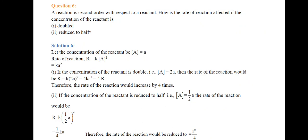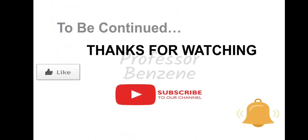In the second case, if the concentration is reduced to half, then rate = K(A/2)² = KA²/4, so the rate is reduced to one-fourth of the original value. We'll see you in the next video.